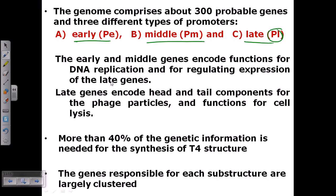The early and middle genes encode functions for DNA replication and for regulation of expression of different late genes. And the late genes encode head and tail components for the phage particles, because late genes are usually responsible for the production of all structural proteins.